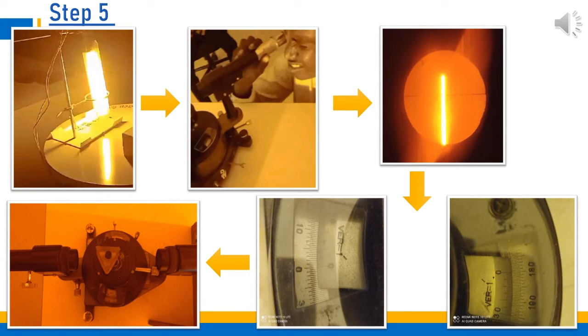Observe the direct ray without placing the prism and note the readings. Then mount the prism on the prism table in such a way that the light from the collimator is incident on one of the refracting faces of the prism.